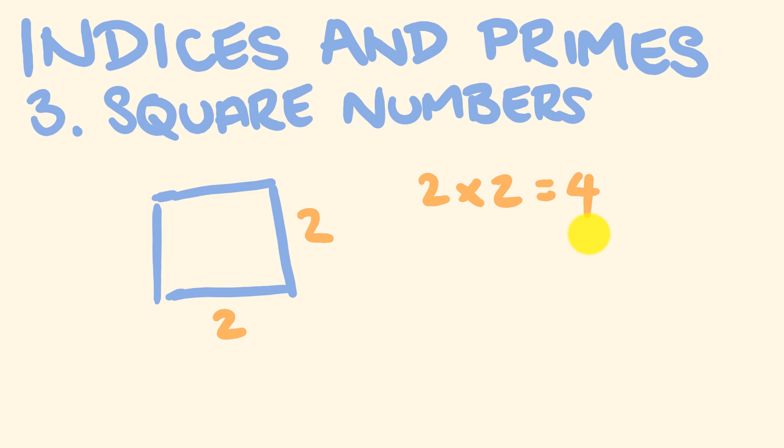But we have a shortcut for this using index notation. We would say that this is 2 to the power of 2, which equals 4. This is 2 multiplied by itself 2 times.